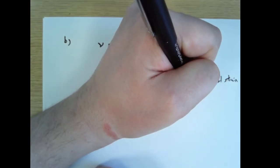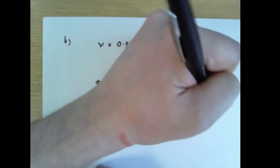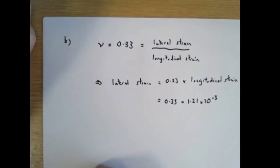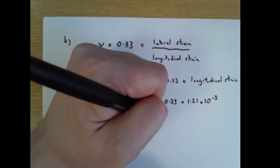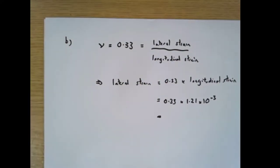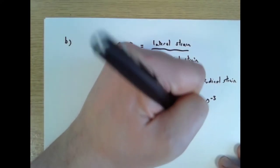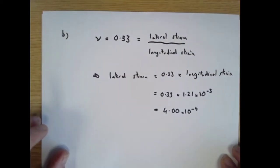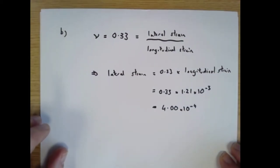That's 0.33 times 1.21 times 10 to the minus 3. I must just be careful with what I'm pulling from further back in the question. And that equals 4.00 times 10 to the minus 4. And it's a strain, so it doesn't have any units. So I can leave that as it is.